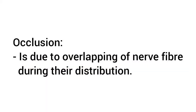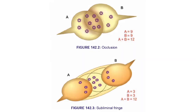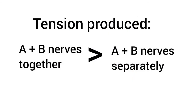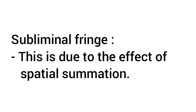Occlusion is due to the overlapping of nerve fibers during distribution. Next one is Subliminal Fringe, which is exactly opposite to the occlusion phenomenon. Here, the sum of the tension produced when two nerves are stimulated together is more than the sum when each nerve is stimulated separately. This is due to the effect of spatial summation.